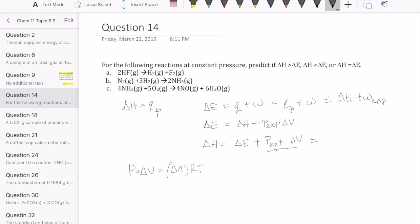In other words, I can write this as delta H equals delta E plus delta N times RT. Now remember what delta N represents: delta N is the difference in the number of gas on product minus gas on reactant.